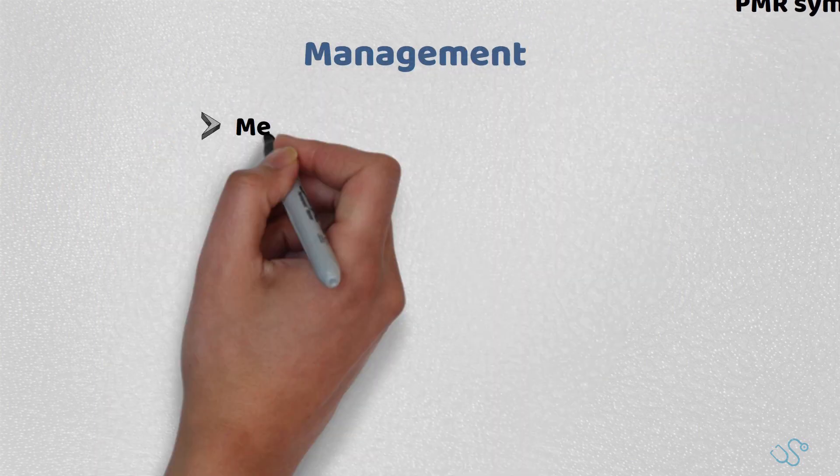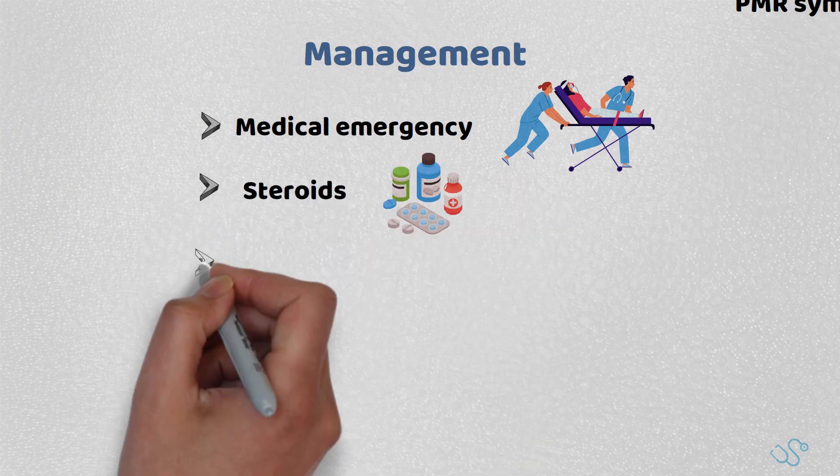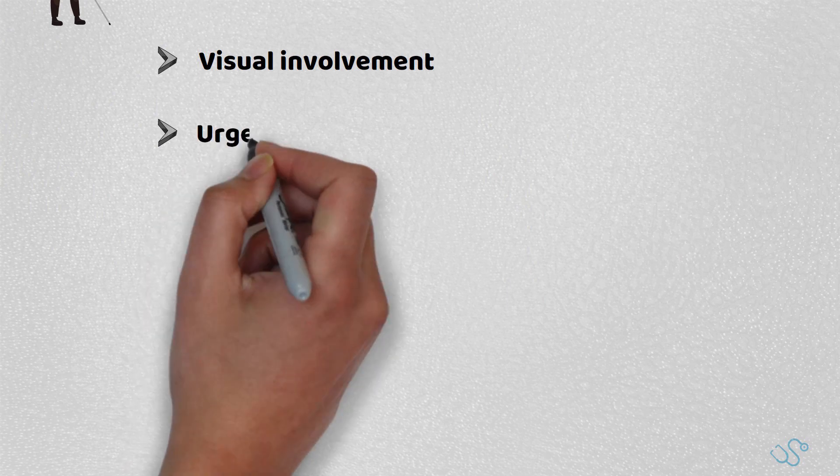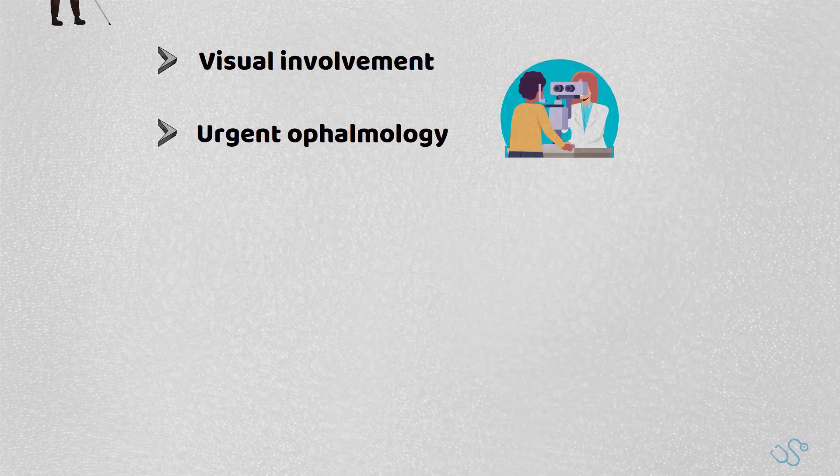Managing temporal arteritis should be seen as a medical emergency, with early treatment of steroids needed to prevent permanent visual loss and disability. If there is visual involvement, urgent ophthalmology assessment is often required, with steroids used as a holding measure until they are seen.